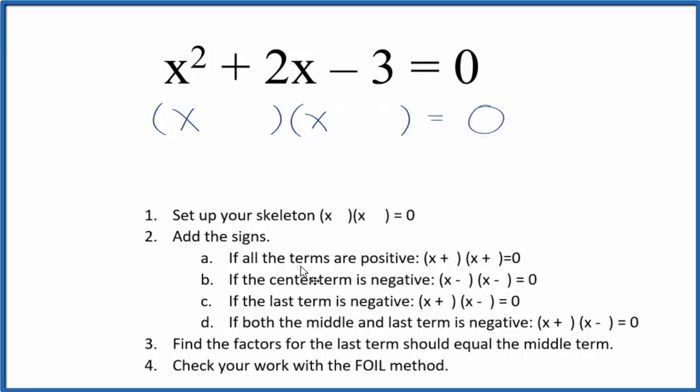we can add the signs into our skeleton equation. So we have a positive and a negative. So if the last term is negative, then we're going to have a positive here, and then we'll put a negative right here.